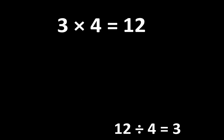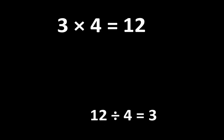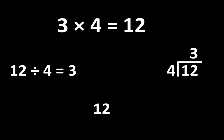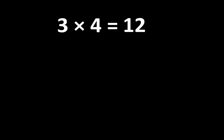If we look at 12 divided by 4 is equal to 3, we can see that there are several different ways to write this idea. We can write 12 divided by 4 is equal to 3, or we can write it as a fraction — 12 over 4 is equal to 3 — and that can be very useful. So understanding 3 times 4 is more than simply knowing that the product is 12.